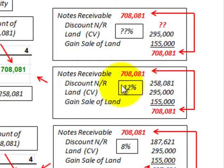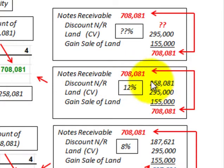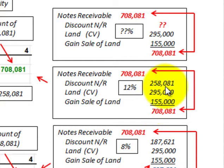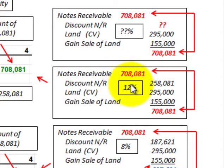For our first case using the 12% discount: notes receivable of $708,081, discount on notes receivable of $258,081 at the 12% rate, land's carrying value of $295,000, and gain on sale of land of $155,000. Totaling our credits gives us $708,081, which balances with our debit amount in notes receivable of $708,081. So we can confirm that 12% was the proper interest rate to use.